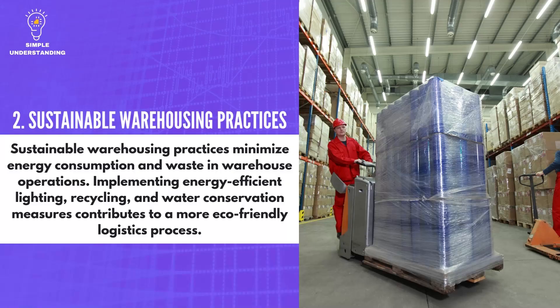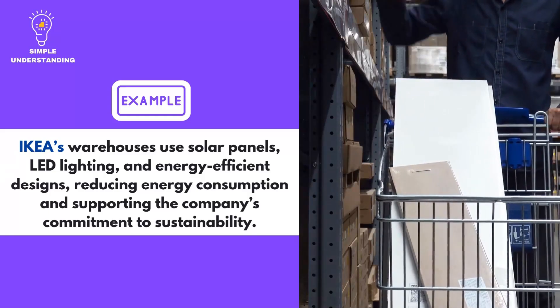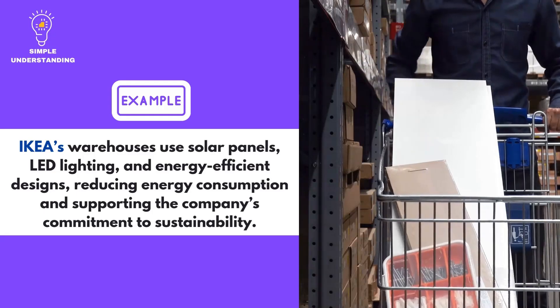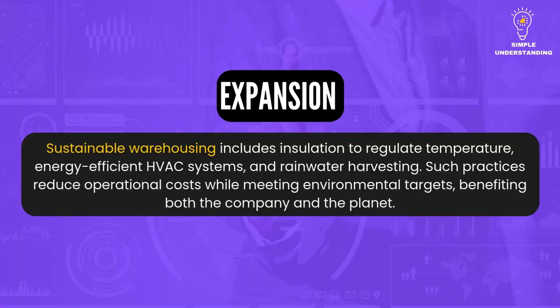2. Sustainable Warehousing Practices. Sustainable warehousing practices minimize energy consumption and waste in warehouse operations. Implementing energy-efficient lighting, recycling, and water conservation measures contributes to a more eco-friendly logistics process. Ikea's warehouses use solar panels, LED lighting, and energy-efficient designs, reducing energy consumption and supporting the company's commitment to sustainability. Sustainable warehousing also includes insulation to regulate temperature, energy-efficient HVAC systems, and rainwater harvesting, reducing operational costs while meeting environmental targets.